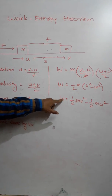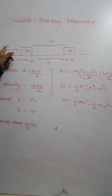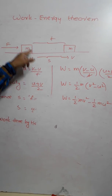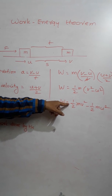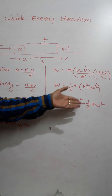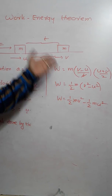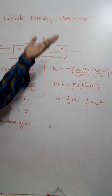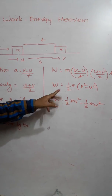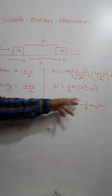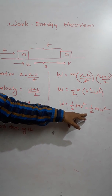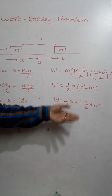So the work done by a constant resultant force on a body is always equal to the change in its kinetic energy. This is called the work-energy theorem — the relation between work and change in kinetic energy. Thank you. See you in the next class.